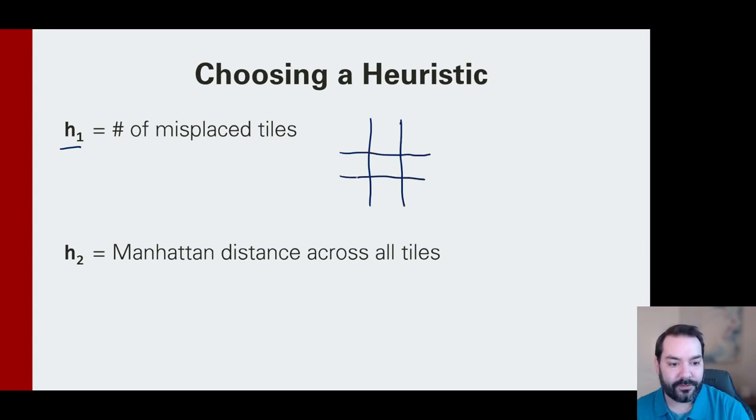For example, if I had my 3 tile, my 8 tile, my 7 tile, 4, 1, 2, 5, and then 1, 2, 3, 4, 5, and 6 in this place.